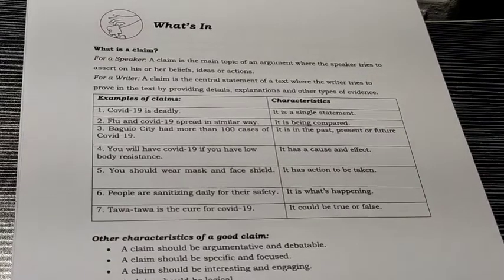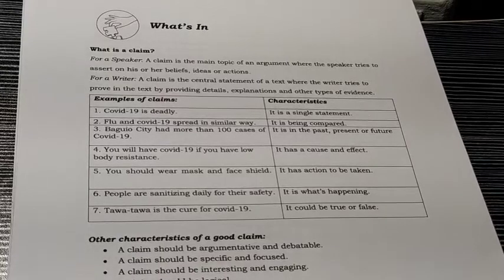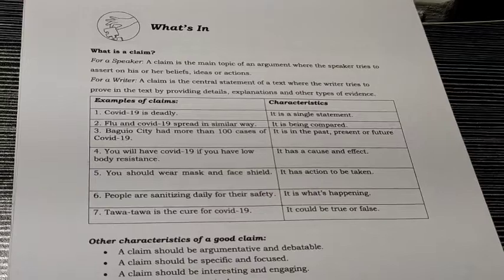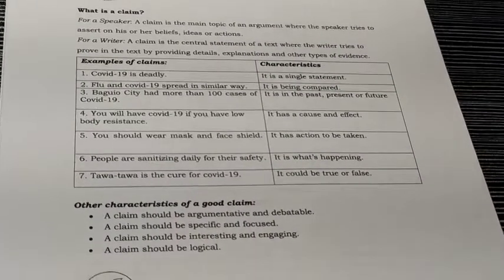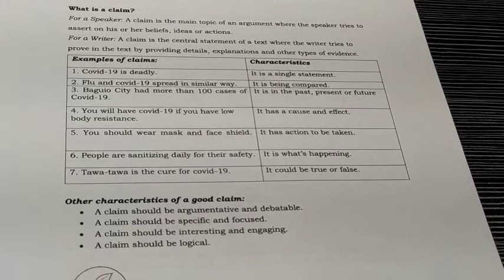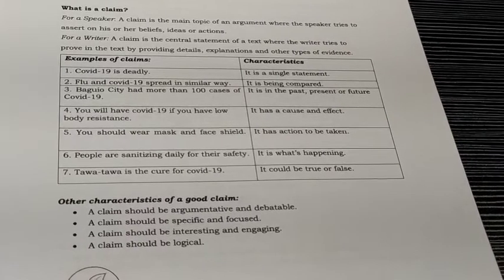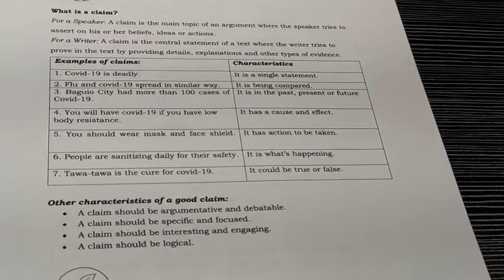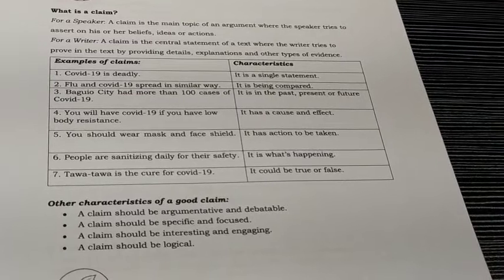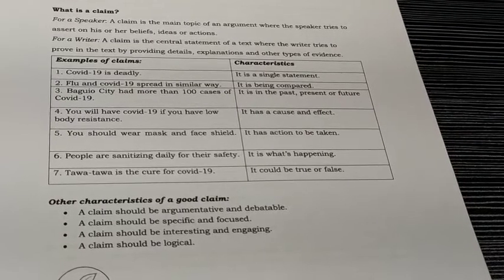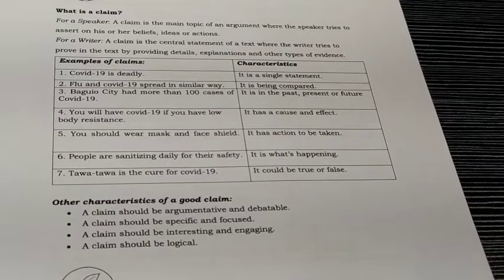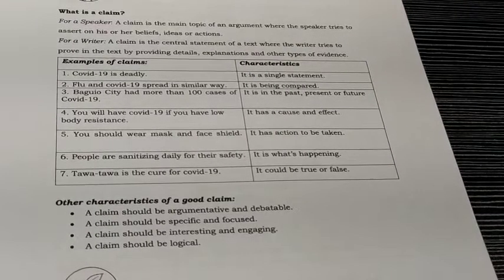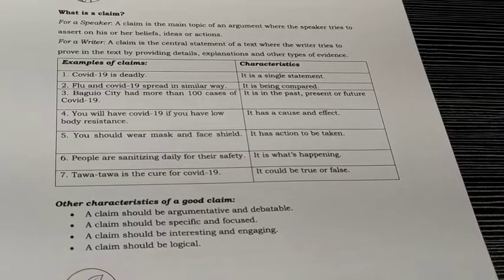When we say claim, it is your side — your own idea on a particular subject or significant matter. We have examples of claims with their characteristics. Number 1: 'COVID-19 is deadly' — its characteristic is that it is a single statement. Number 2: 'Flu and COVID-19 spread in a similar way' — it is being compared, showing how flu and COVID-19 are similar in spreading.